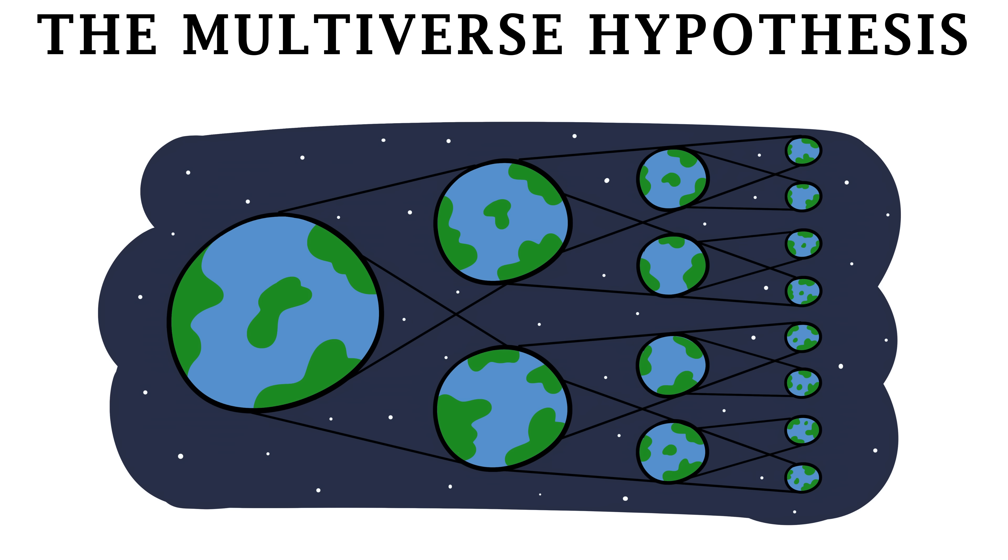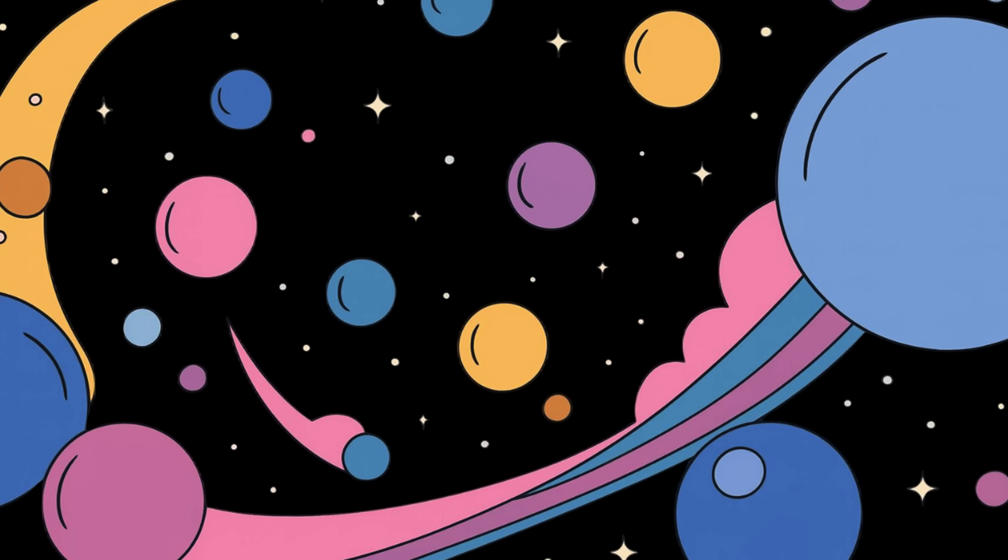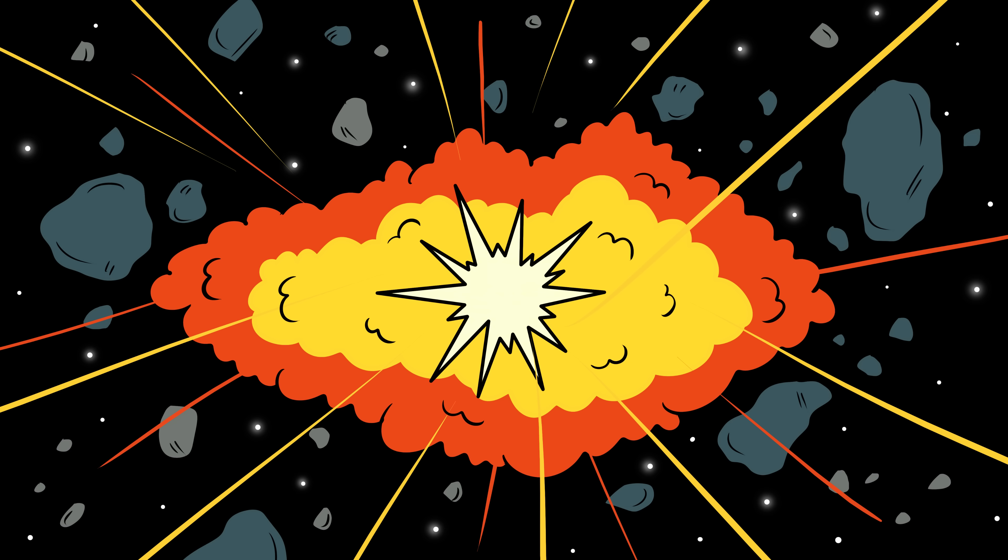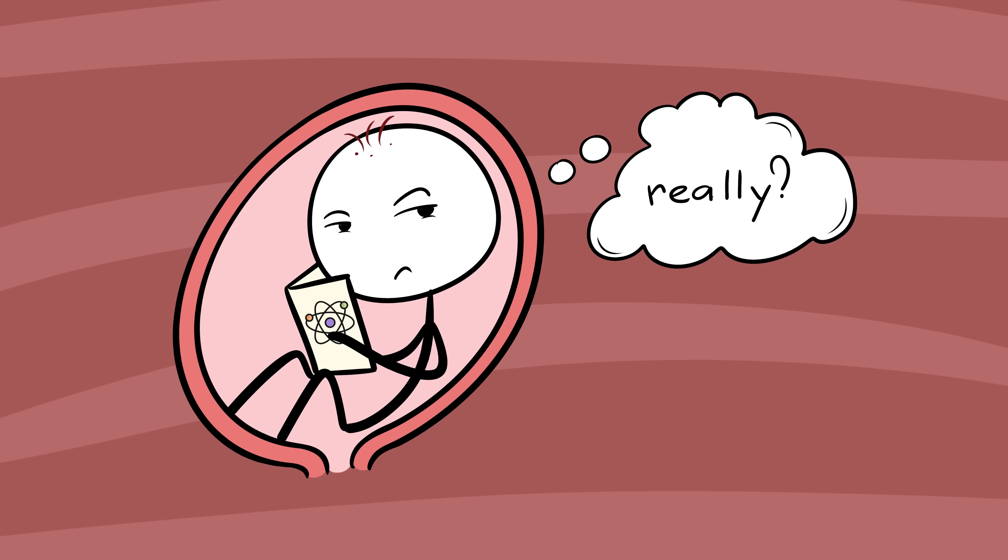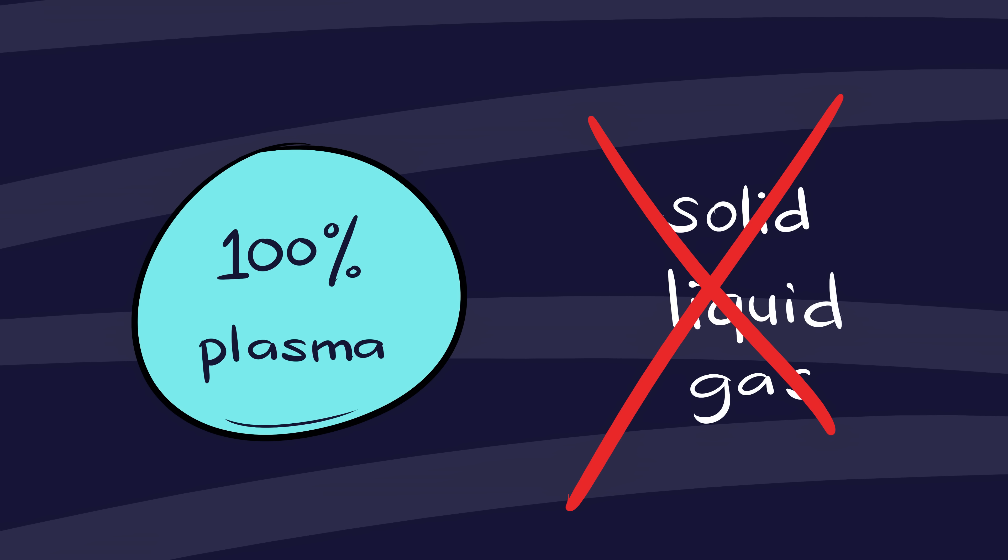Number five, the multiverse hypothesis. If you ever feel small, just remember, our entire universe might be one bubble among infinite others. The multiverse theory suggests that the Big Bang wasn't a single event, but part of a never-ending cosmic foam, with universes constantly popping into existence. Each one could have different physical laws, constants, or even dimensions. Maybe there's a universe where gravity is stronger, stars are blue, and you were never born. Maybe another where everything's made of plasma, or time runs backward.